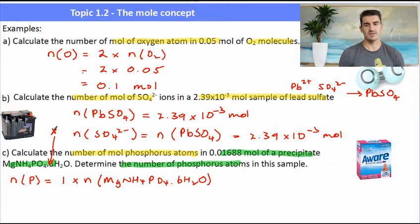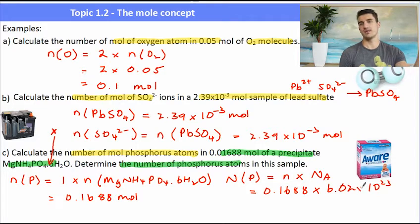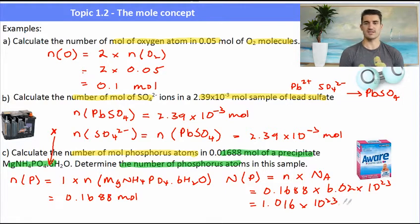Which is going to be the same 0.01688. The little dot between the formula and the water just says that we have six waters attached to the molecule. Once we've found the number of moles of phosphorus, we can then use the formula from last episode to work out the number of phosphorus atoms by doing mole times Avogadro's number which gives us 1.016 times 10 to the 23 atoms. I had four significant figures in my precipitate so I can have four significant figures in my answer.